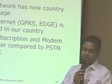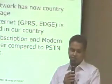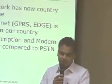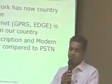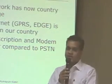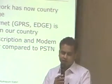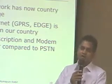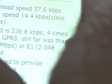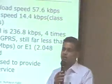Now we can see the cellular access. The cellular network has no countrywide coverage, that's true. And we can also get internet using the GPRS or EDGE modem, and that is also used widely right now. Subscription and modem cost is a little higher than the dial-up counterpart. But the download speed — regular speed — is actually 57.6 kbps, and upload speed is only 14.4 kbps.